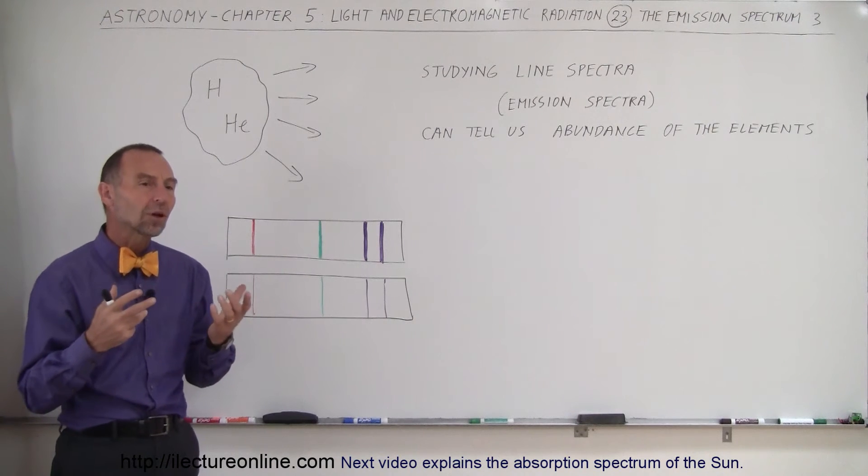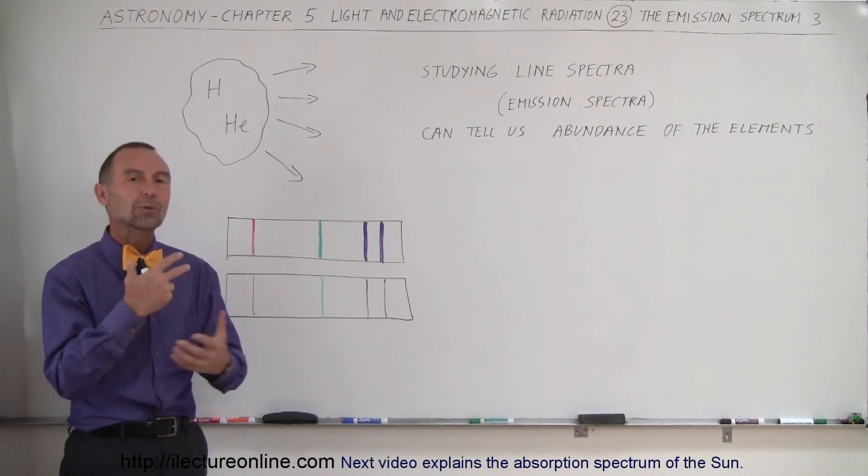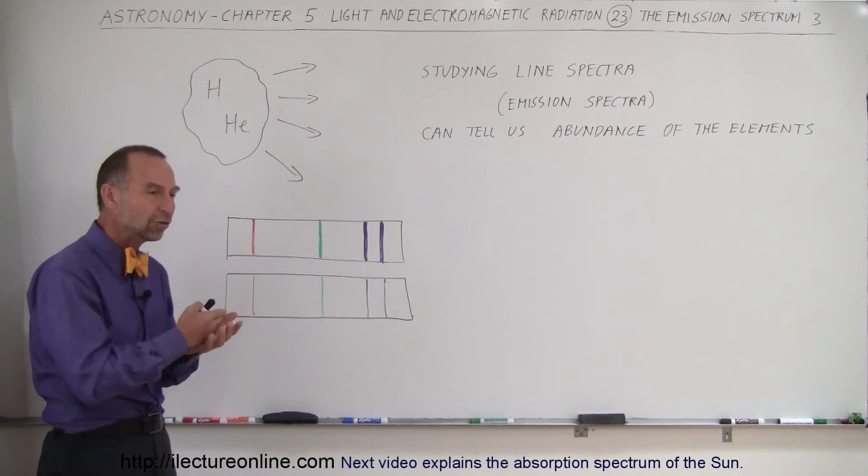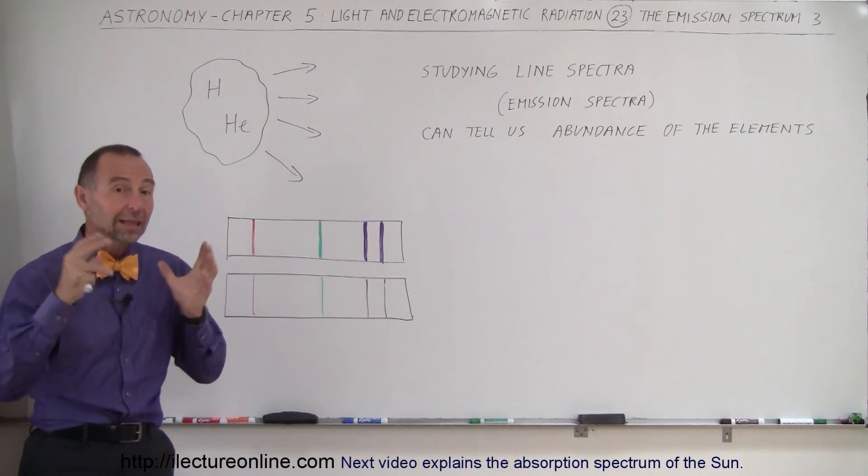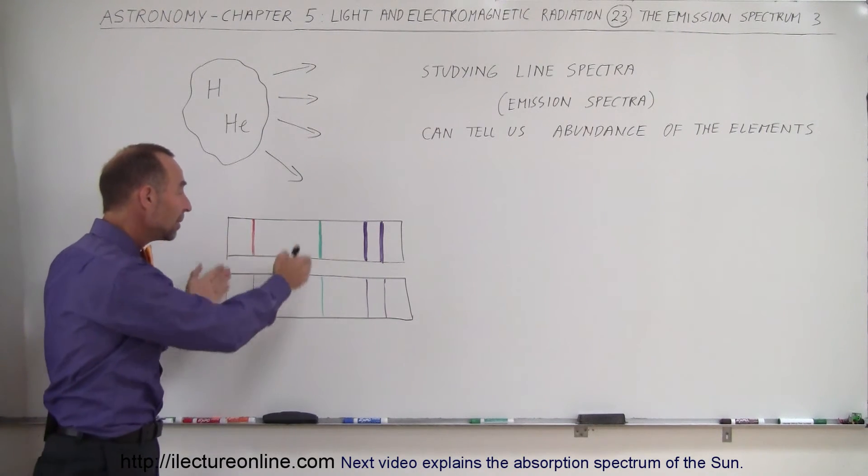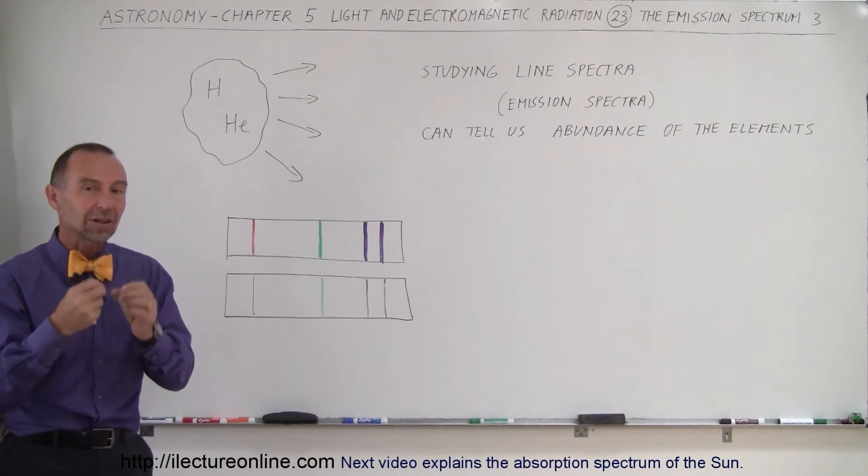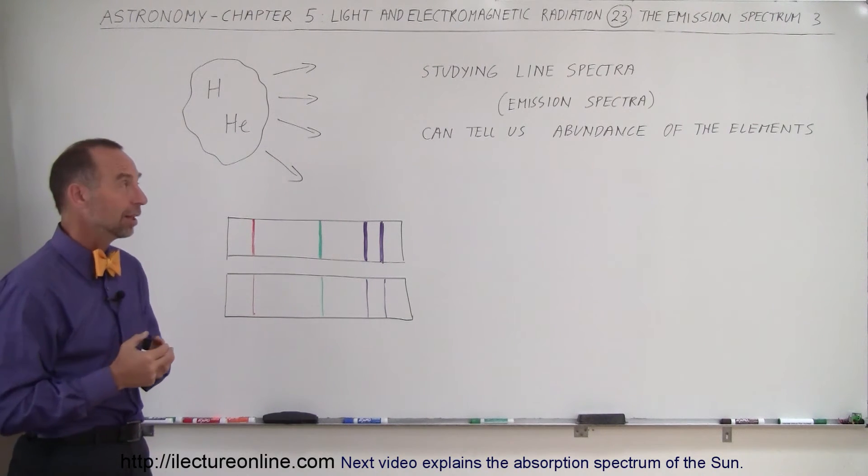But in planetary nebulas, we sometimes have a very different arrangement, a very different ratio of the various gases. That shows up in the various intensities of the lines making up the spectrum of that particular element.